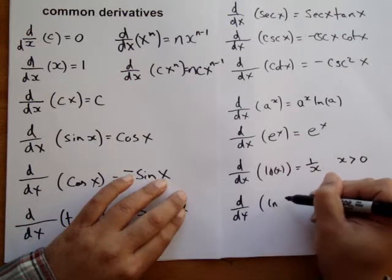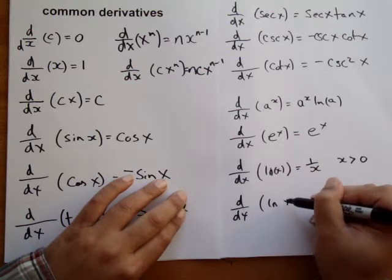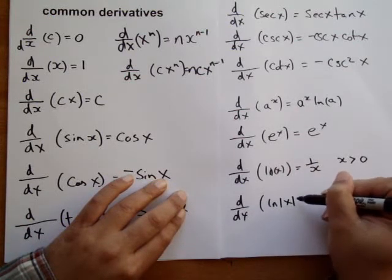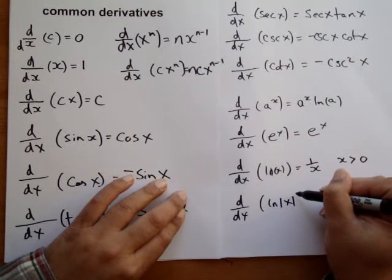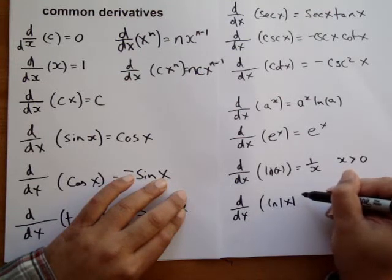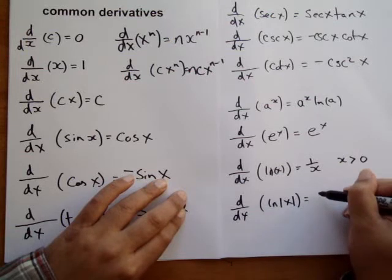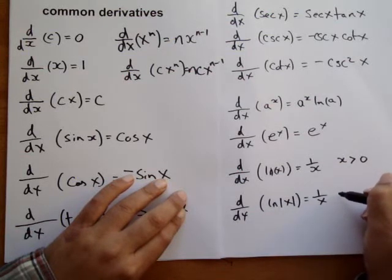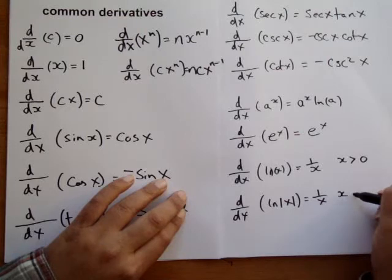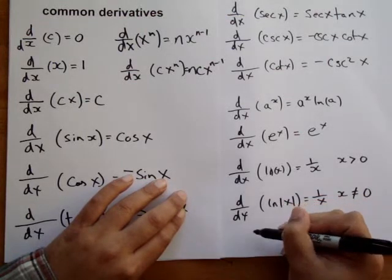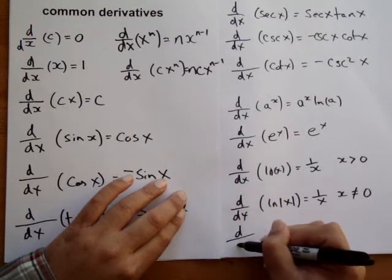And the derivative of the absolute value of natural log of x is 1 over x where x is not equal to 0.